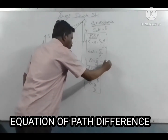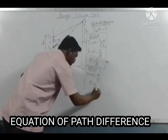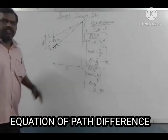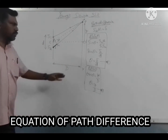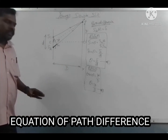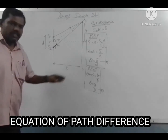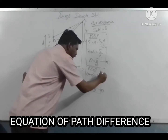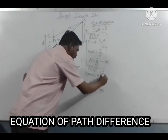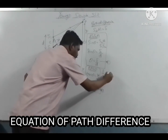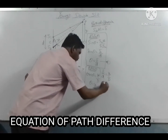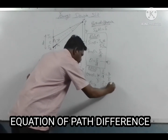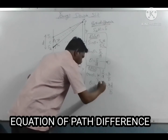Combining equation 1 and equation 2: delta over d equals y over D, from which delta equals y times small d divided by capital D. This is the path difference formula.